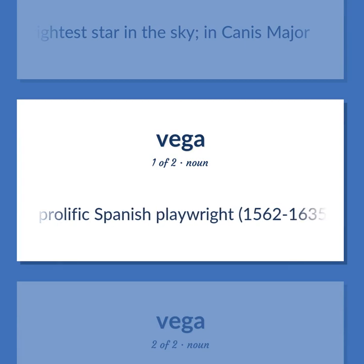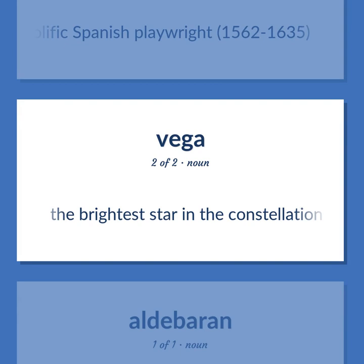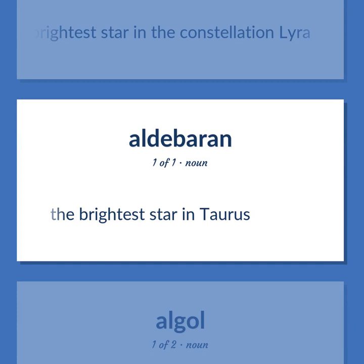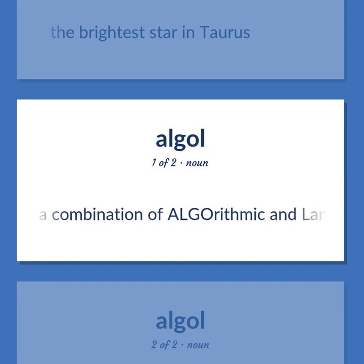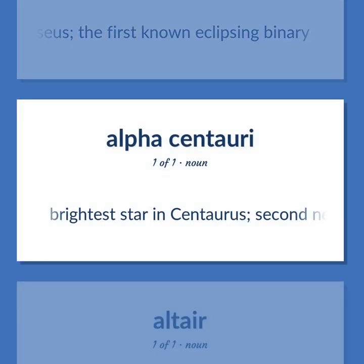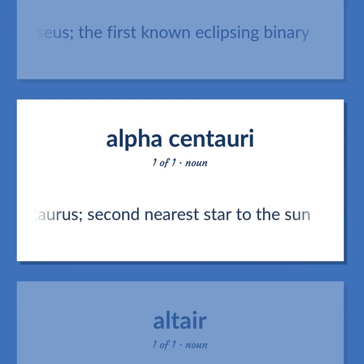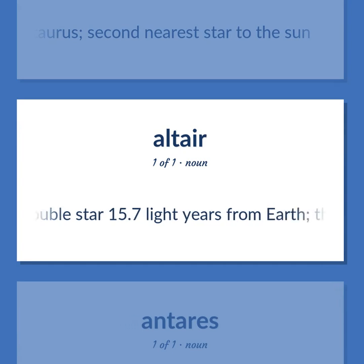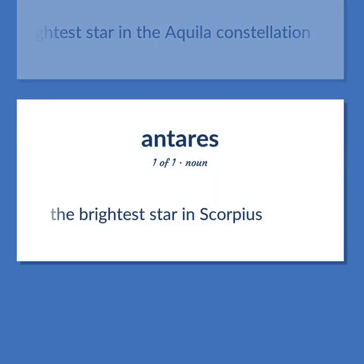Lope de Vega: Prolific Spanish playwright, 1562 to 1635. Vega: The brightest star in the constellation Lyra. Aldebaran: The brightest star in Taurus. ALGOL: From a combination of algorithmic and language — a programming language used to express computer programs as algorithms. Algol: The second brightest star in Perseus, the first known eclipsing binary. Alpha Centauri: Brightest star in Centaurus, second nearest star to the sun. Double star, 15.7 light years from Earth. Altair: The brightest star in the Aquila constellation. Antares: The brightest star in Scorpius.